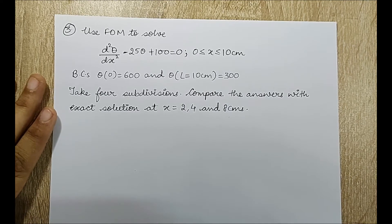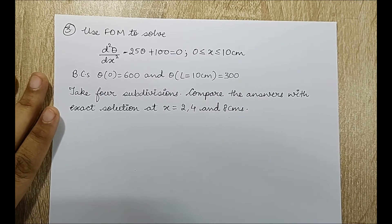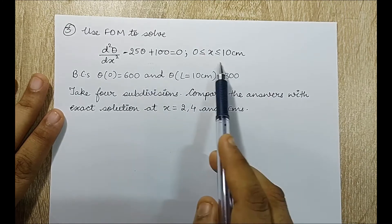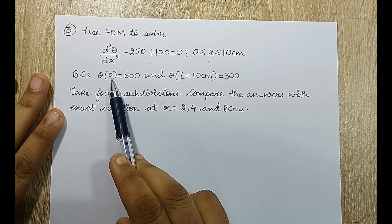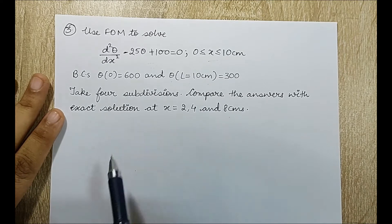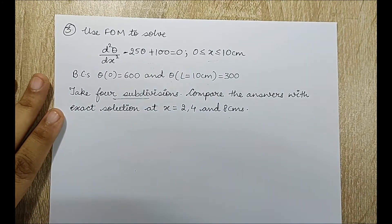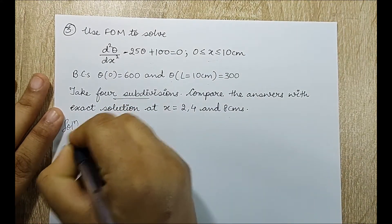Hello everyone, welcome to the next session of finite element analysis. I am solving question 3 of the finite difference method. We will use FDM to solve the given differential equation. The domain is given with theta at x equal to 0 being 600 and theta at x equal to 10 centimeter being 300. Take four subdivisions, n equals 4, and compare the answers with the exact solution at x equal to 2, 4, and 8 centimeters.